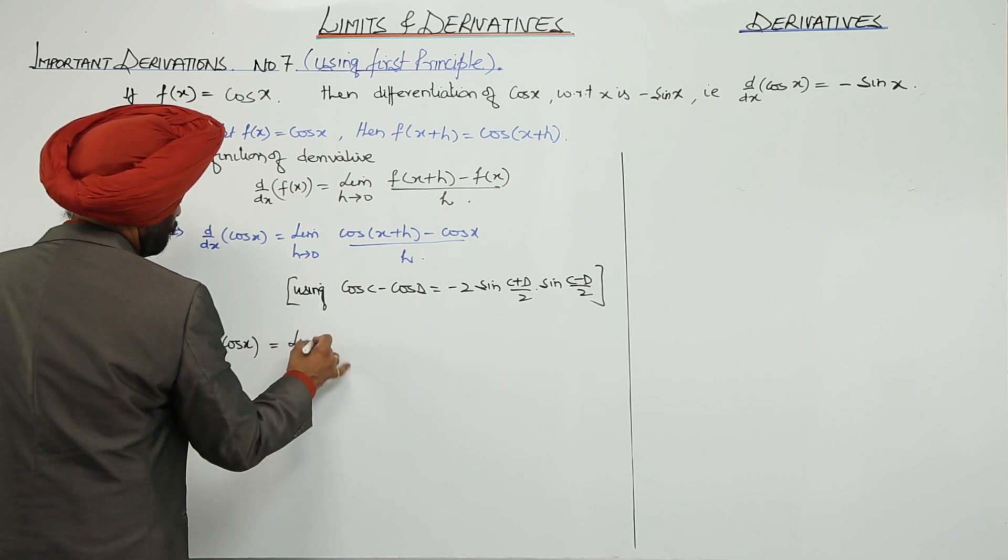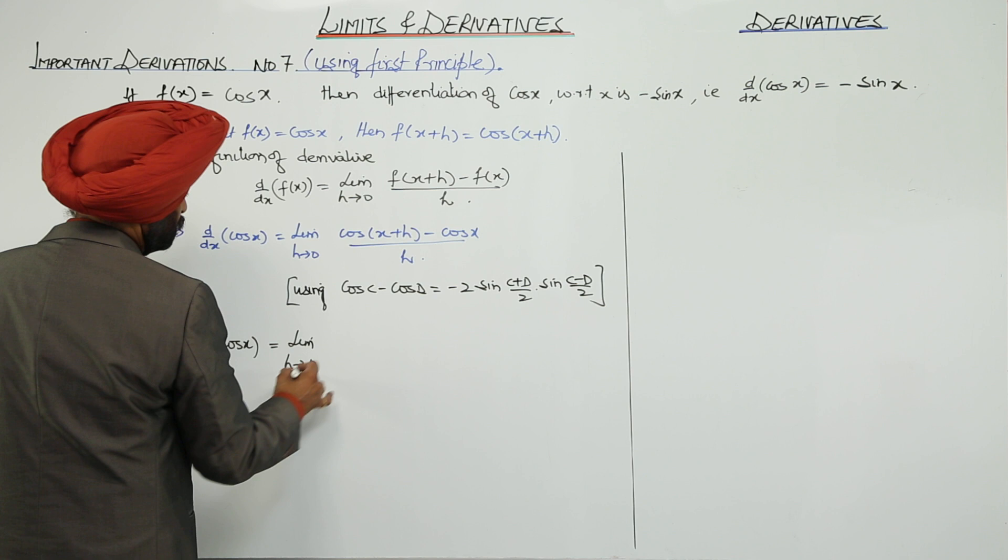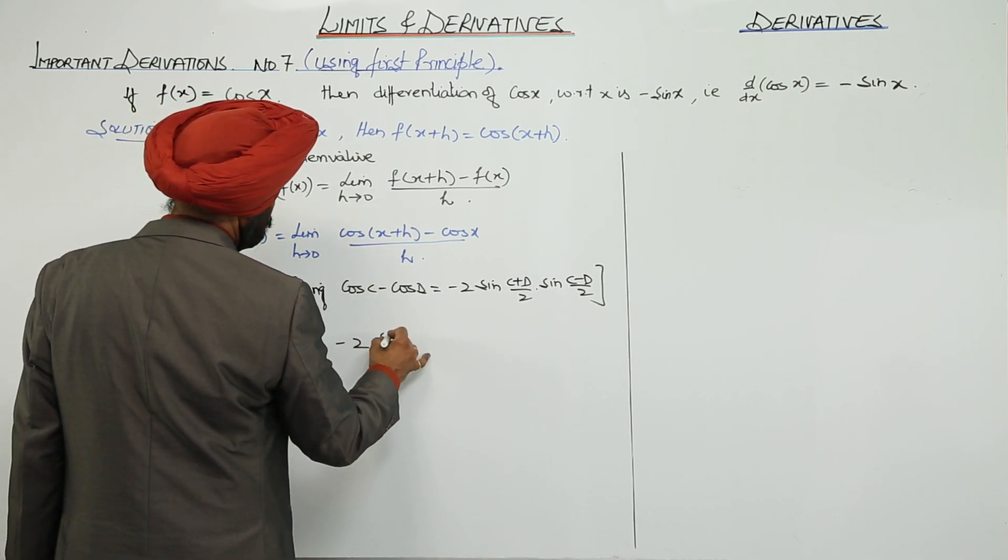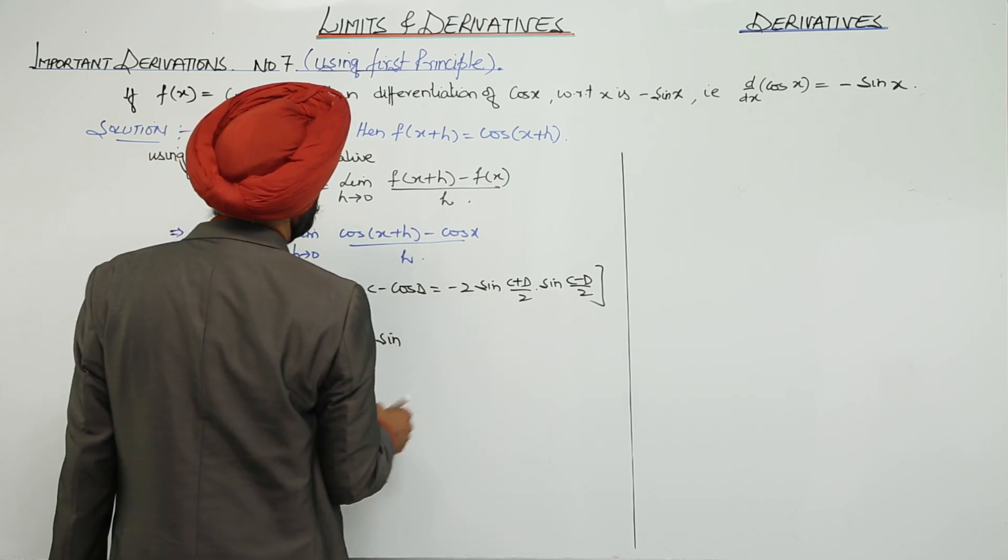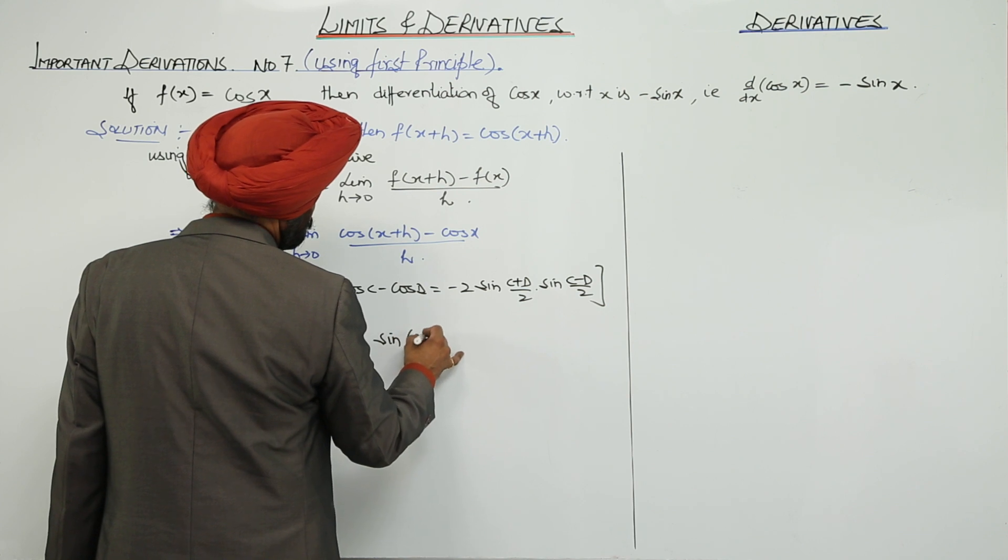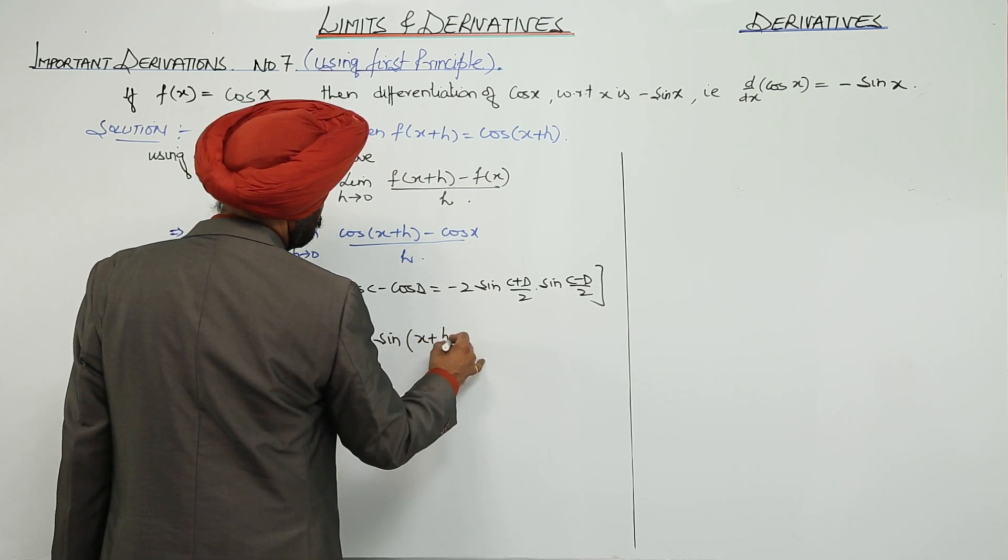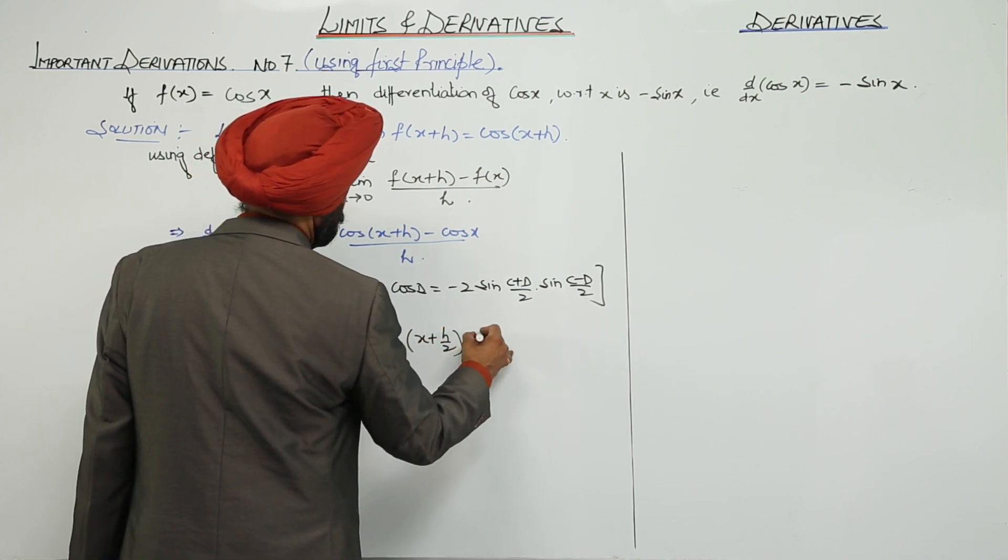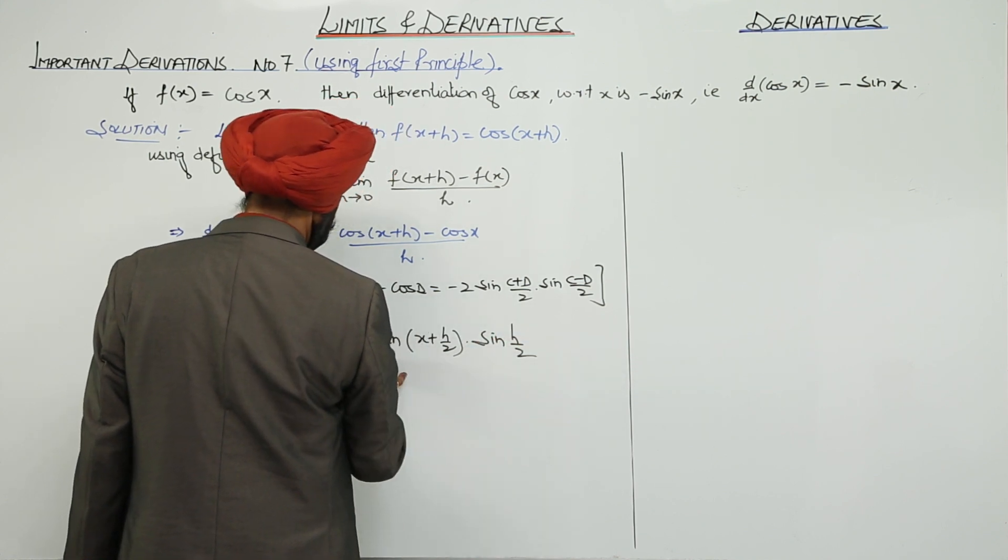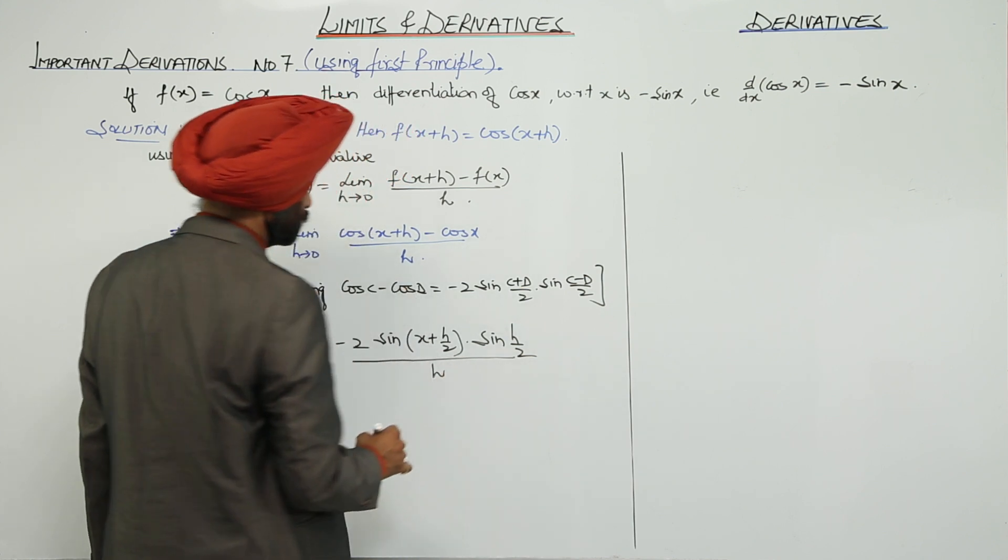Now, limit h approaches to 0, negative of 2 sin, now C plus D, x plus h plus x. This becomes (2x + h)/2, into sin(h/2) upon h.